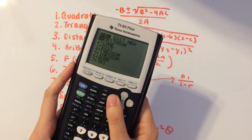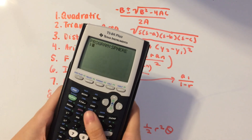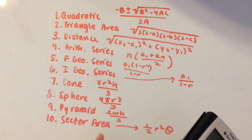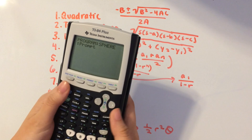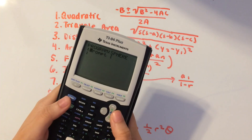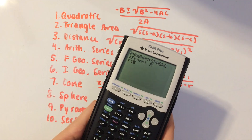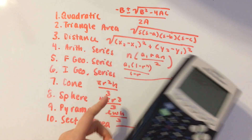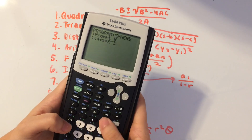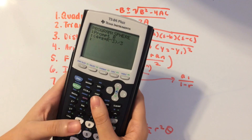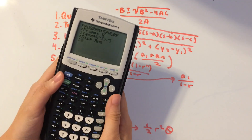Now we have the sphere. Create a new program called SPHERE. Prompt for R, which is the radius. The formula is 4 times pi times r cubed over 3. Enter that, divide by 3, display the answer, and that's it for sphere.